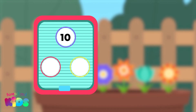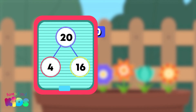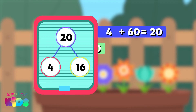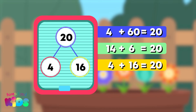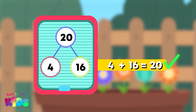The fifth number pair to 10 is 4 and 6. That means a number bond to 20 is 4 and 16. Which number sentence shows 4 plus 16? 4 plus 16. Well done.